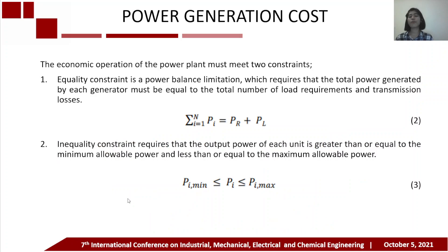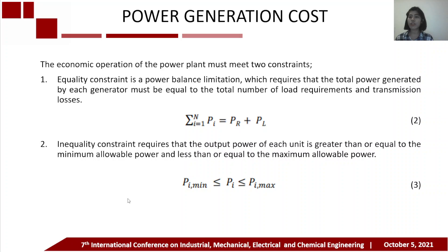The economic operation of the power plant must meet two constraints. First, the equality constraint, which is the power balance limitation requiring that the total power generated by each generator must equal the total load requirement and transmission losses, expressed by equation 2. Second, the inequality constraint requires that the output power of each unit is greater than or equal to the minimum allowable power and less than or equal to the maximum allowable power, expressed in equation 3.